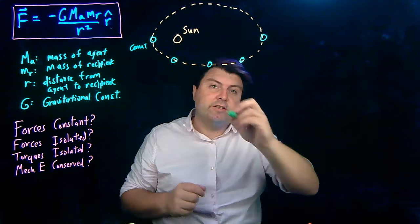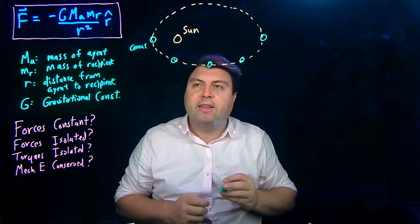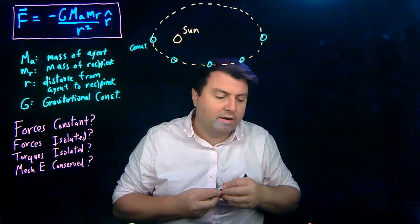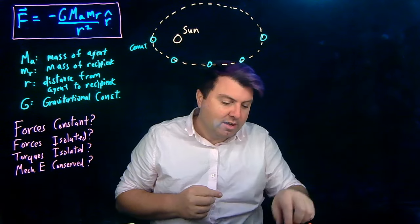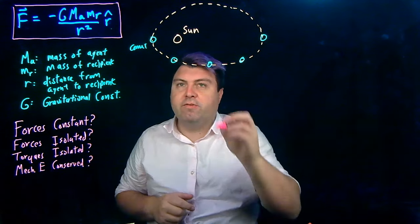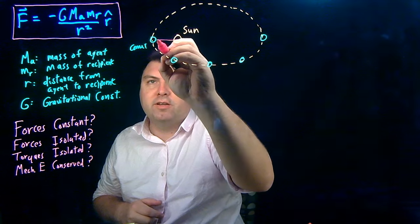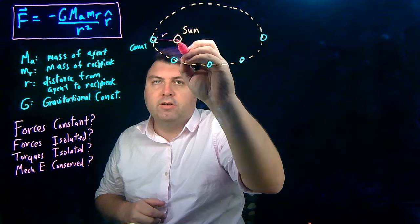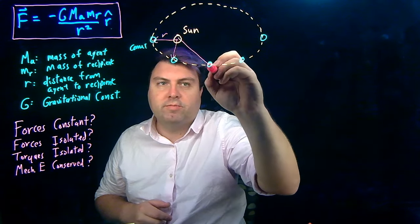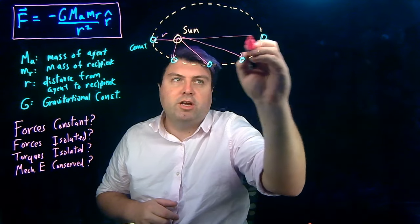and the distance as it travels around in this elliptical path is not constant in radius. So if our path is not constant in radius, our distance from the sun to the comet changes.